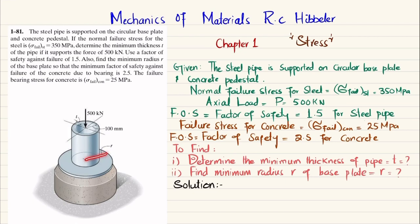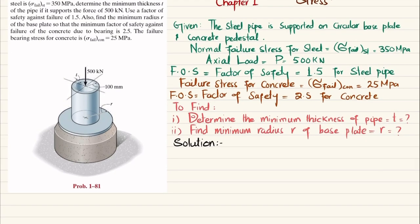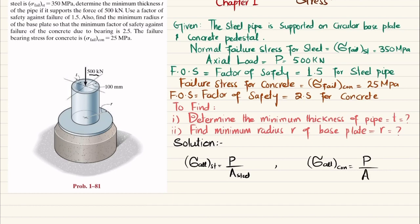We have steel pipe and concrete. The allowable normal stress for steel equals load P divided by the cross-sectional area of the steel pipe. Similarly, the allowable bearing stress for concrete equals load P divided by the area of the concrete, which is the same as the area of the base plate.